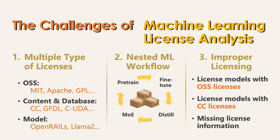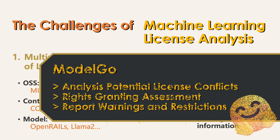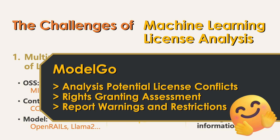ModelGo aims to address these challenges and provide three types of support: analyzing potential license conflicts, assessing rights-granting, and reporting warnings and restrictions. For more information, please refer to our paper and repository. Thank you for your interest.